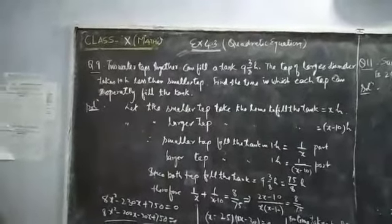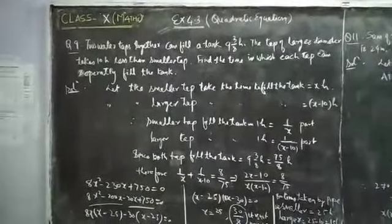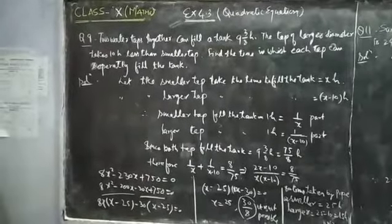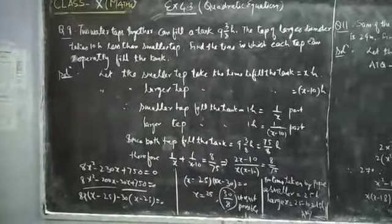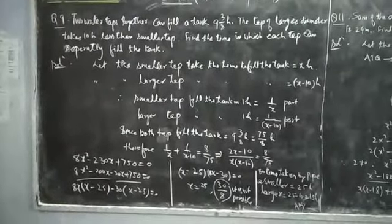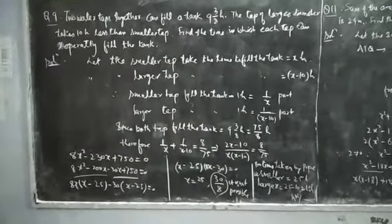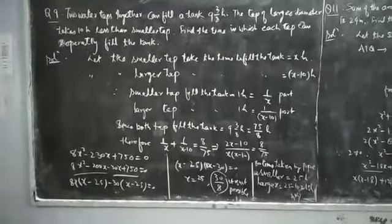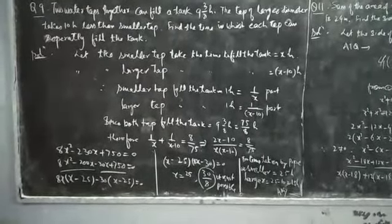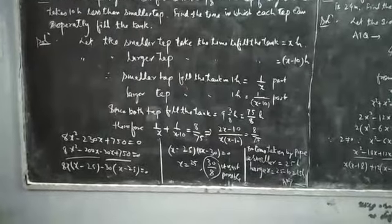Dear students, see question number 9. Two water taps together can fill a tank in 9 and 3/8 hours. The tap of larger diameter takes 10 hours less than the smaller tap. Find the time in which each tap can separately fill the tank. Let the smaller tap take x hours to fill the tank, and the larger tap take x minus 10 hours. The smaller tap fills 1/x of the tank per hour and the larger tap fills 1/(x - 10) per hour. Since both taps fill the tank in 75/8 hours, therefore 1/x + 1/(x - 10) = 8/75.